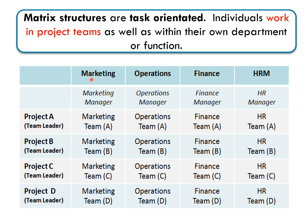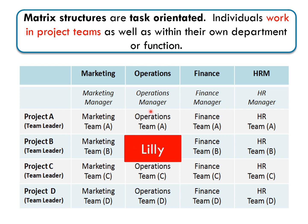If we look at this example, we have four business areas — marketing, operations, finance, and people — but also teams working on particular projects A, B, C, and D. For example, Lily works in operations — normally she's in the operations department responsible to the operations manager. But she's also part of a cross-department project involving people from marketing, finance, HR, and operations. So she's part of two areas: the operations department and a project team with its own team leader.